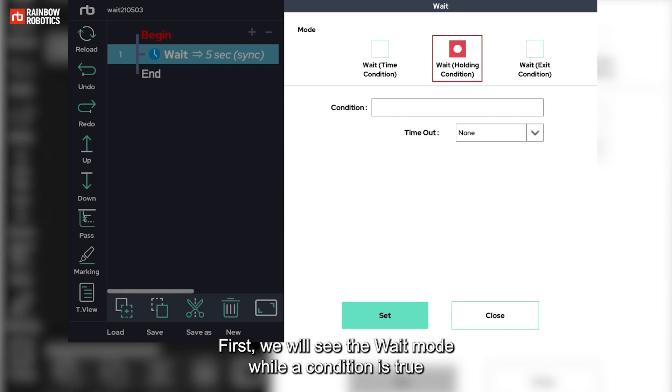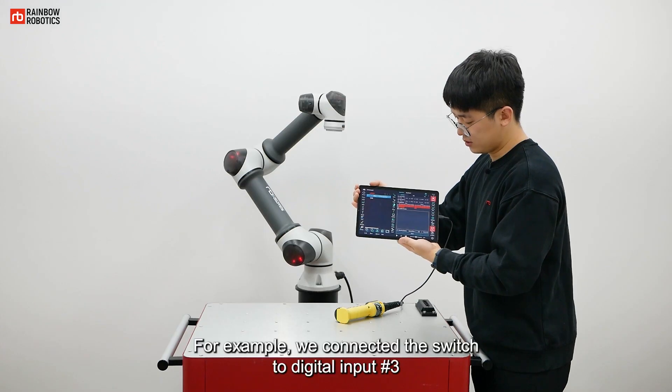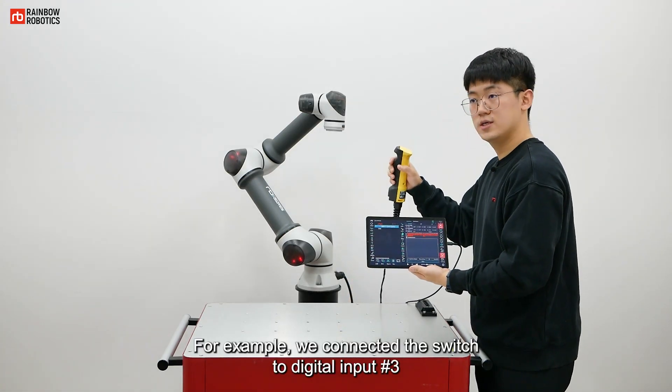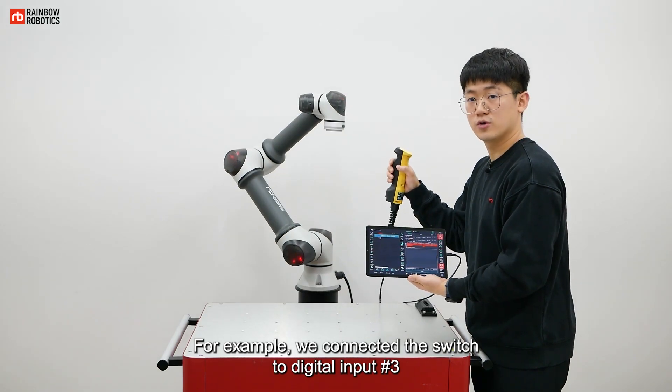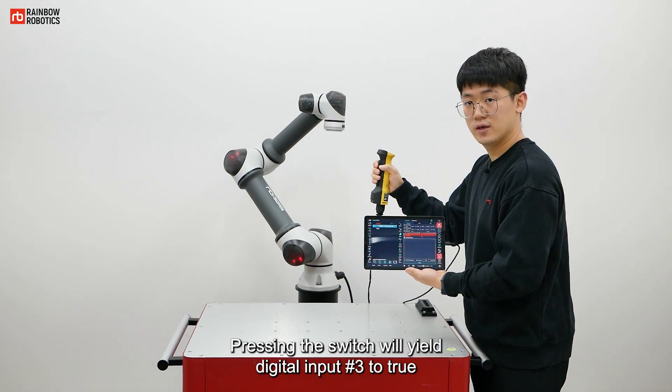First, we will see the wait mode while a condition is true. Here, it says condition, and in this field you can enter variable, digital input, etc. For example, we connected the switch to digital input number 3. Pressing the switch will yield digital input number 3 to true.